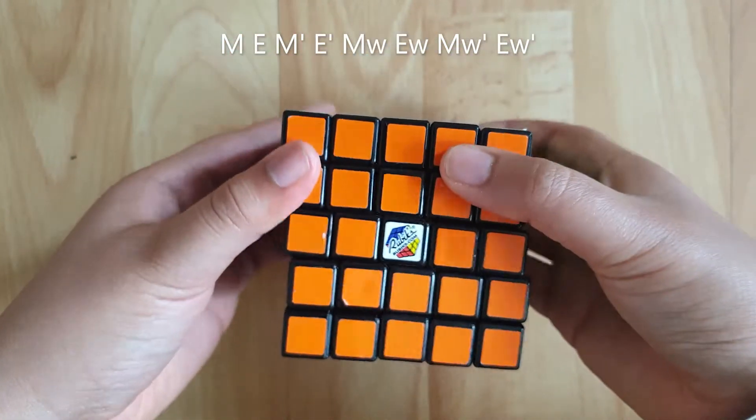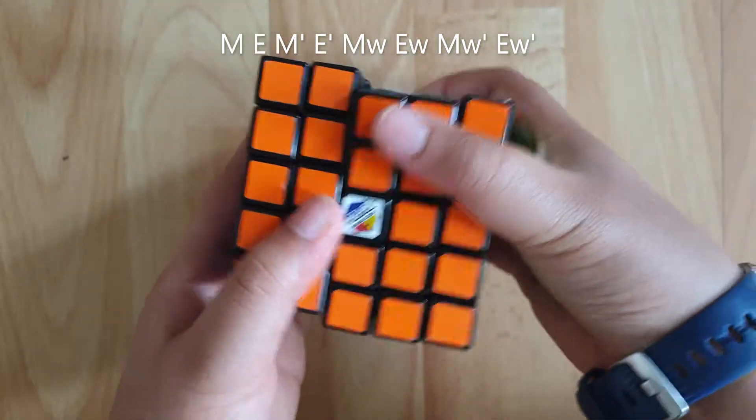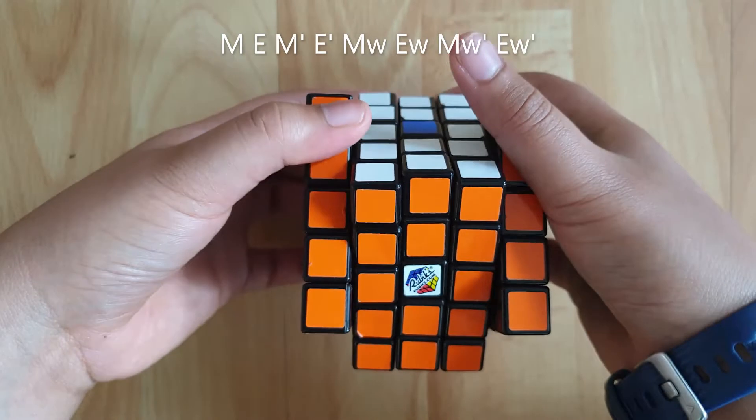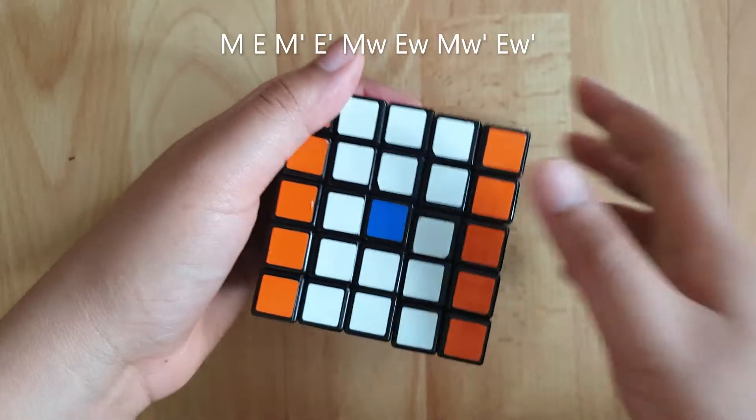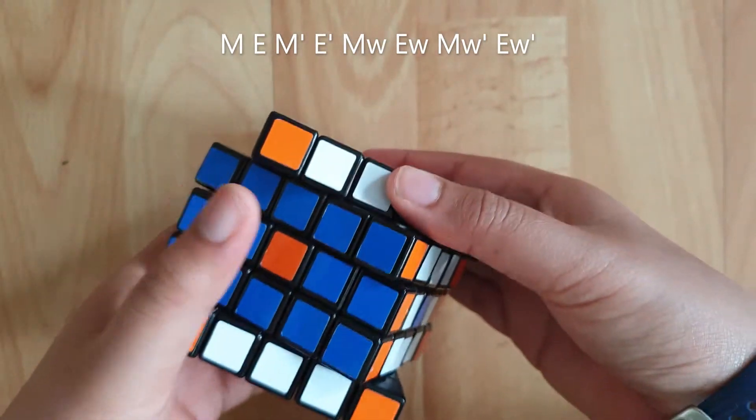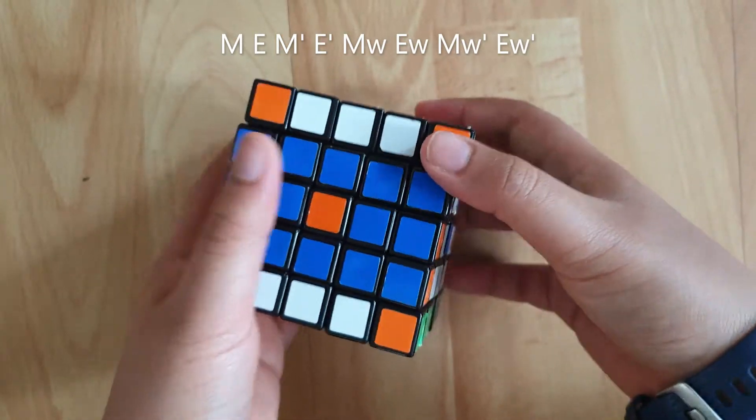Next, what you're going to do is the exact same thing, but instead of taking one layer down, you're going to take three. So the middle three layers down, the vertically middle three layers down, and then you're going to take the three horizontal layers across, and then you're going to reverse them.